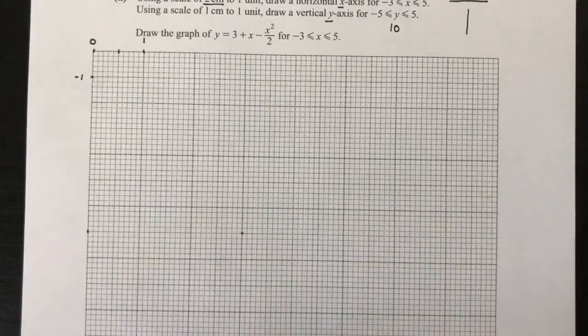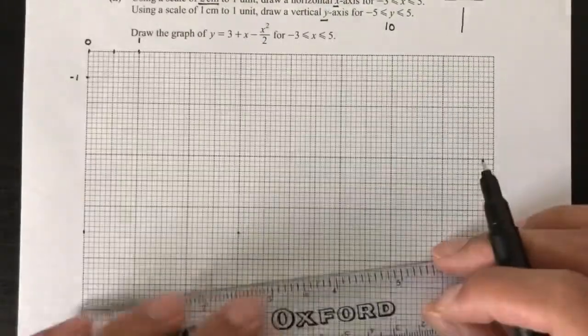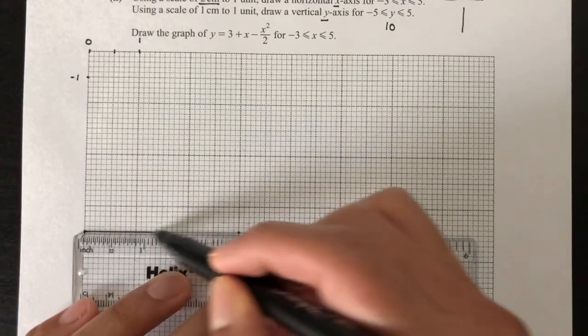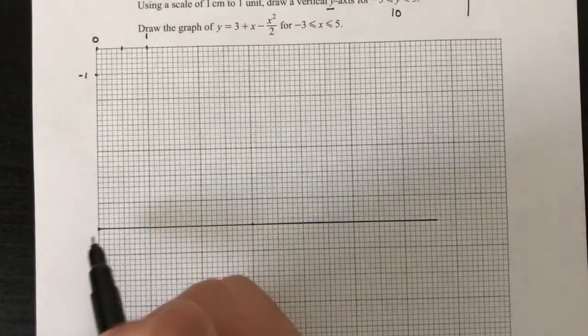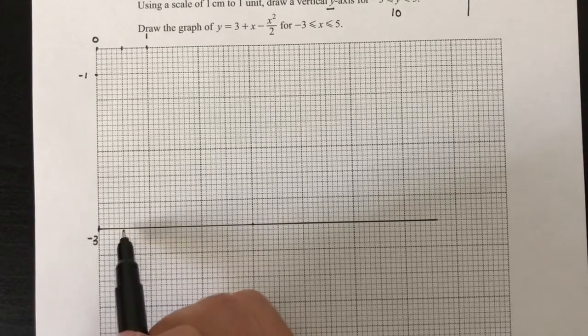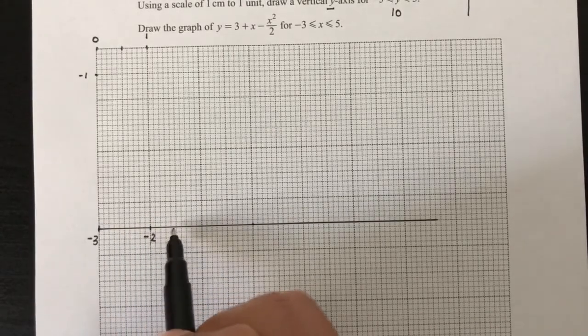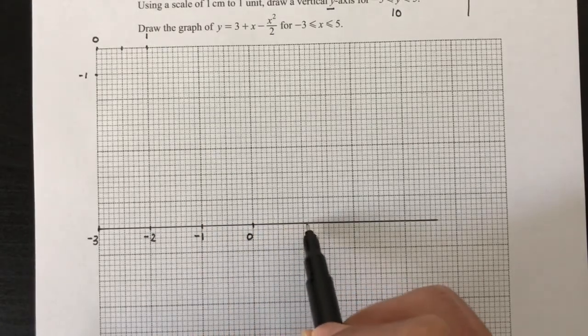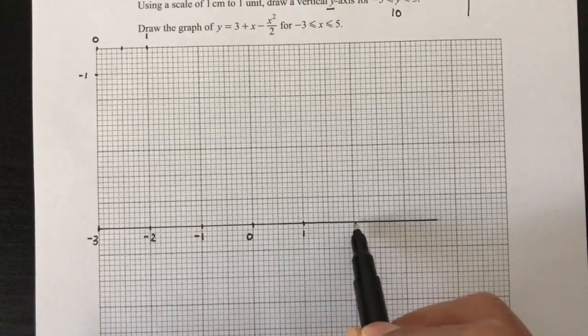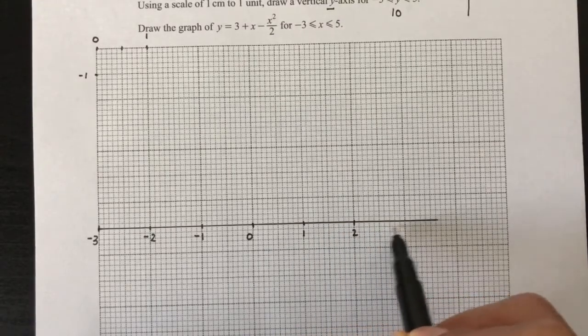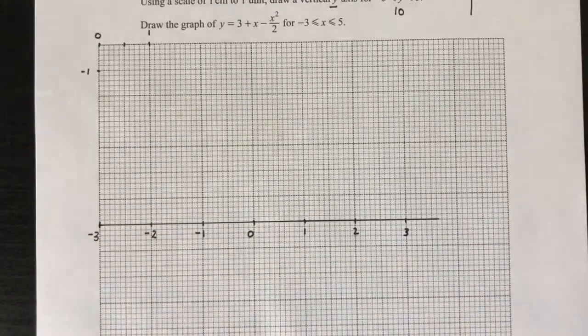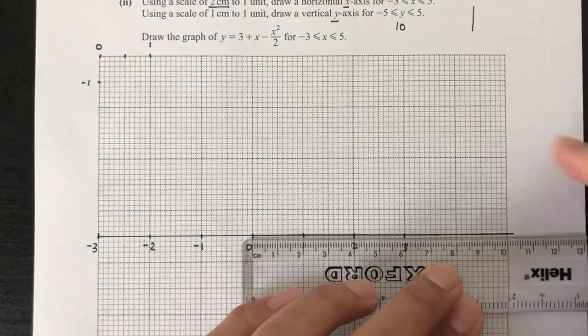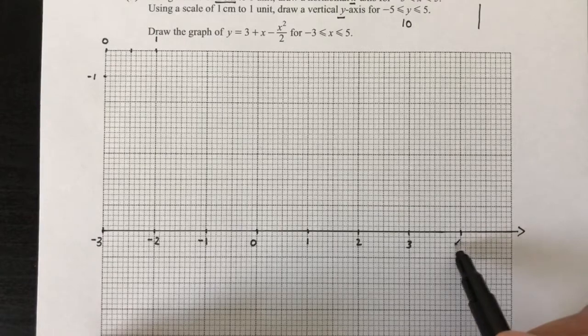So this will be -3. So we just have to mark them. This will be -3. So 1 box, 2 boxes will be -2. 1 box, 2 boxes will be -1. 1, 2, that will be 0. So 1, 2 boxes will be 1. 1 centimeter, 2 centimeters, 2, 1, 2, 3. And continue until 5. This is your x-axis. And it is given between -3 till 5. 4 and 5.